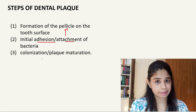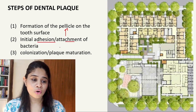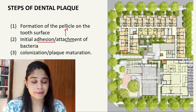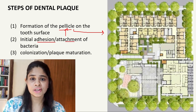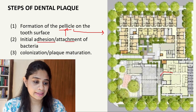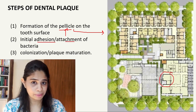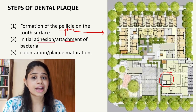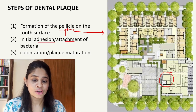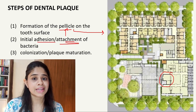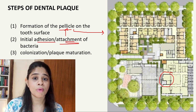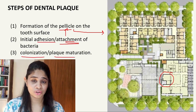Let's take an example to understand these steps better. A new locality is being developed — initially the infrastructure is built up: roads are constructed, landscaping is done, gardens are built. This is similar to pellicle formation on the tooth surface. Once that is done, people start moving in and initially just rent a flat — similar to the initial adhesion of bacteria, which is reversible. Once they like the locality they buy a house, similar to permanent bacterial attachment. Then they settle down, start a family, make friends and form organizations — similar to colonization and maturation of the plaque.